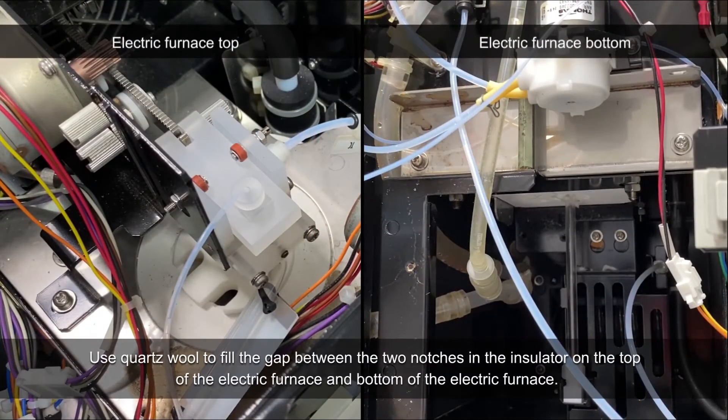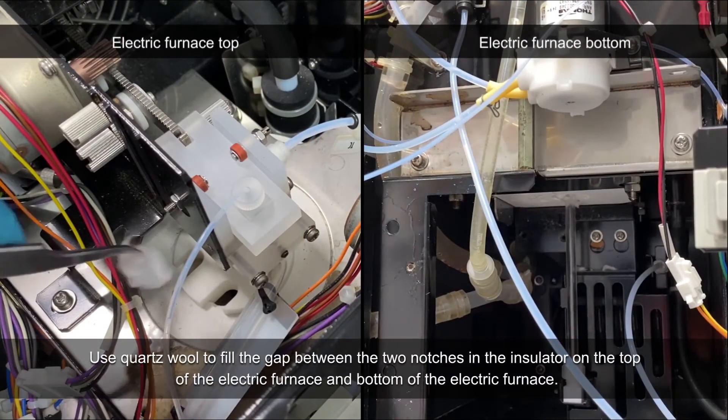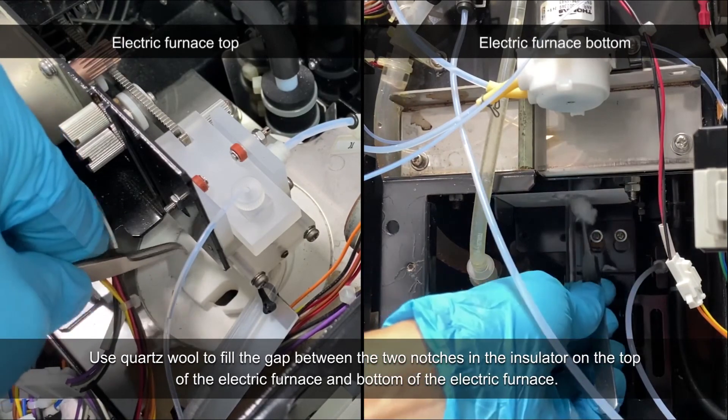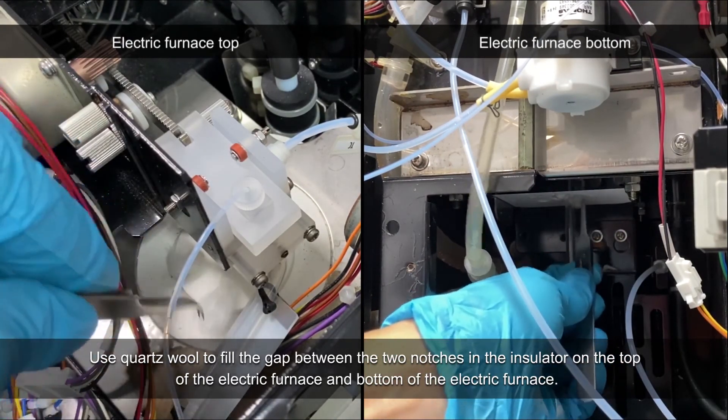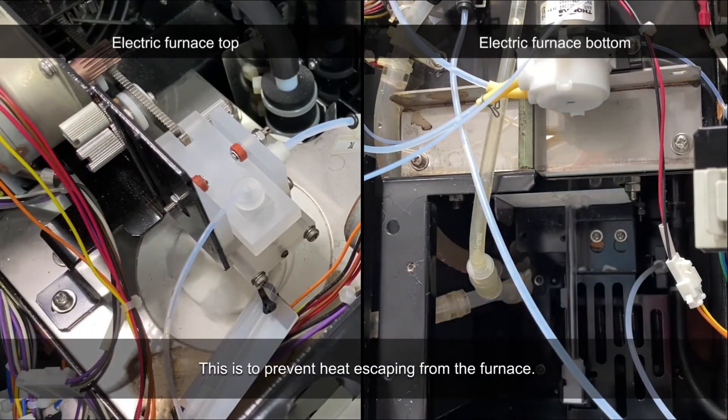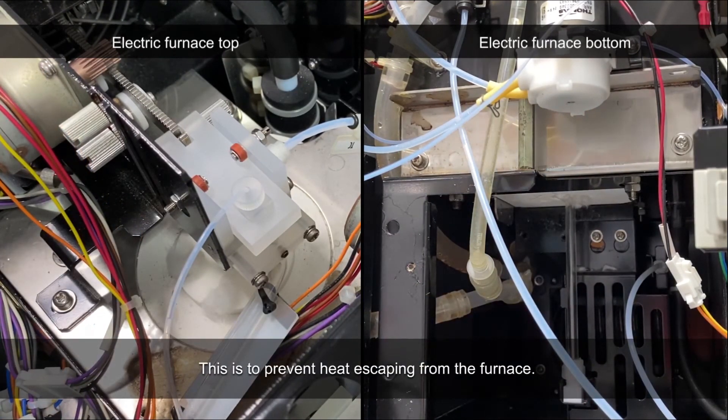Use quartz wool to fill the gap between the two notches in the insulator on the top of the electric furnace and the bottom of the electric furnace. This is to prevent heat from escaping from the furnace.